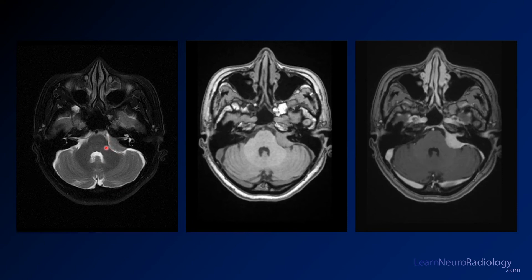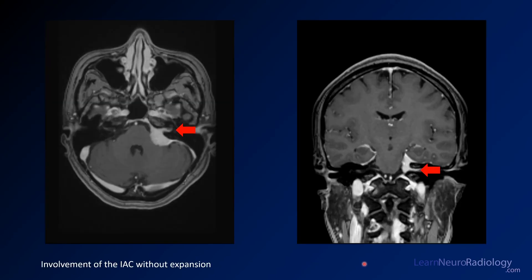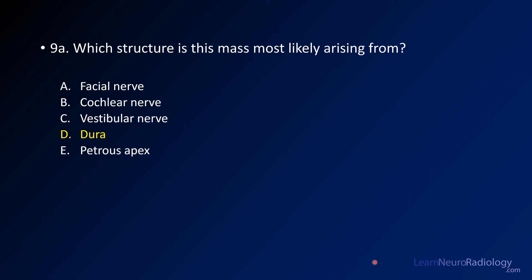Here you see the lesion in the left cerebellar pontine angle. On T2, there is a nice CSF cleft between the mass and the middle cerebellar peduncle, confirming it's extra-axial. On pre-contrast it's relatively homogeneous with extension toward the internal auditory canal. On post-contrast there is a small extension into the IAC and possibly a dural tail, which favors meningioma. The IAC is involved but not particularly expanded — it's crawling along the canal rather than centered within or expanding it.